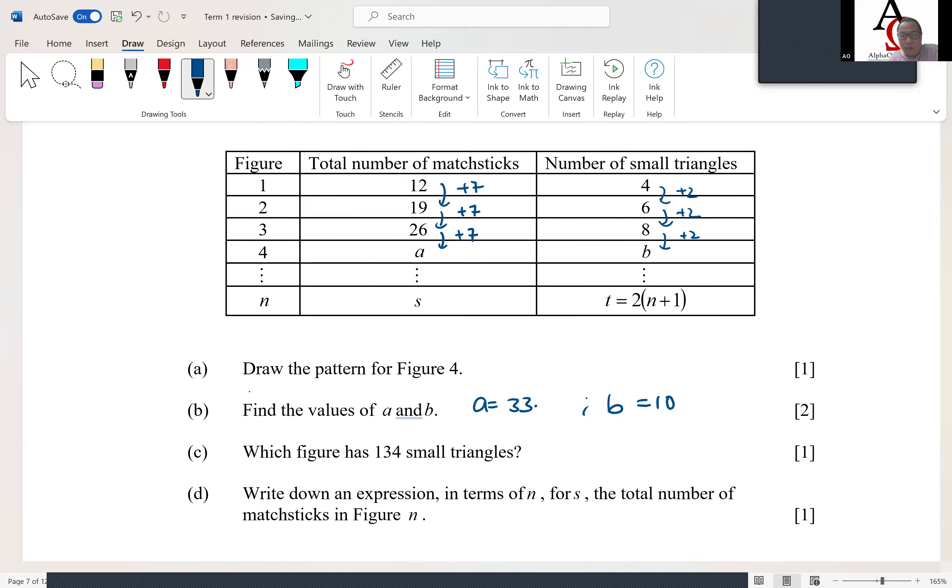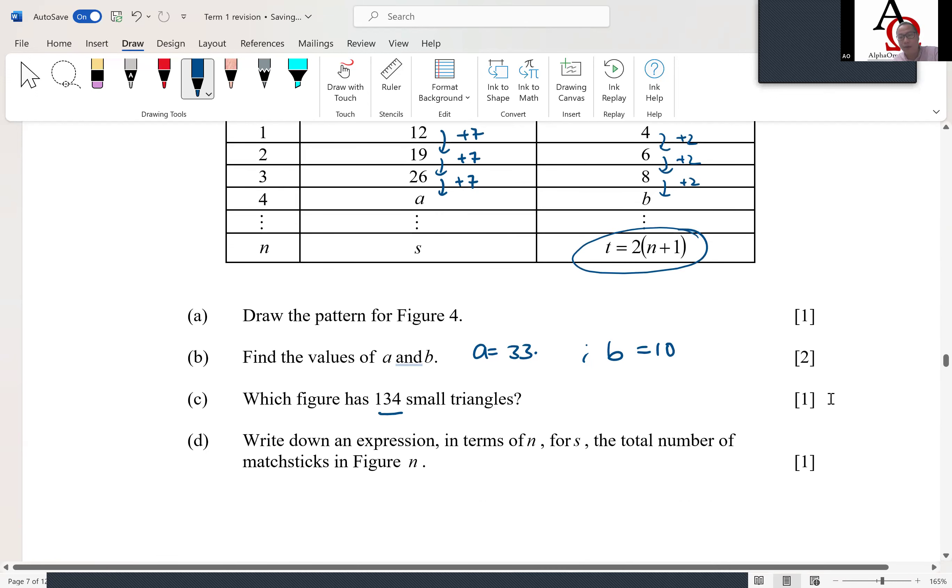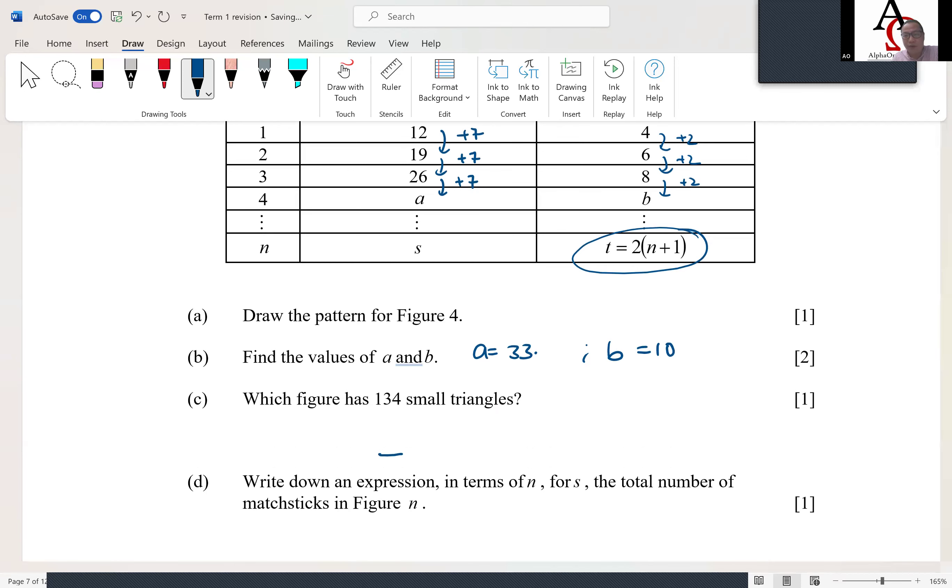So now they give us—which figure has 134 small triangles? We'll just equate this to 134, then you can find the n value, which is the number of figures. Okay, so equate it to 134, divide, you get 67, so n equals 66.